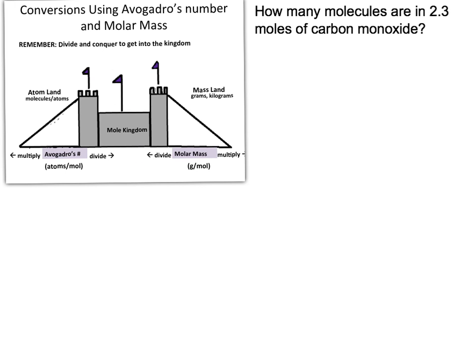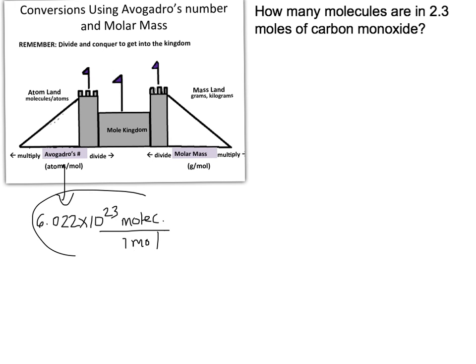The approach is very similar to how we did the mass-to-mole calculations. The main difference, though, is that we're going to be utilizing Avogadro's number. Avogadro's number is 6.022 times 10 to the 23rd of whatever the substance is — whether it's atoms, molecules, ions, whatever. In this case, we're going to be looking at molecules per one mole. So this is the conversion factor we're going to be utilizing for conversions on this left-hand side of the chart.